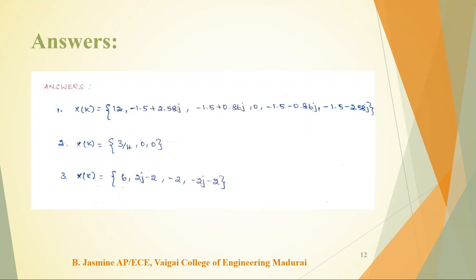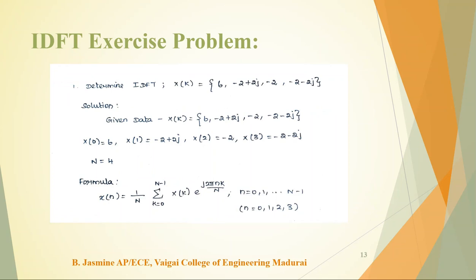Next is the IDFT exercise problem. As we have seen, IDFT is the inverse process used in digital to analog conversion. Here we use the IDFT formula. We are given capital X(k), and in IDFT we convert X(k) back to small x(n). The X(k) values contain complex terms (j terms). We extract each sample: X(0), X(1), X(2), X(3), and so on.